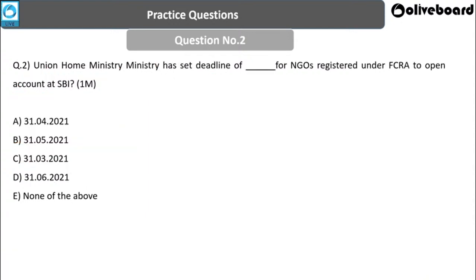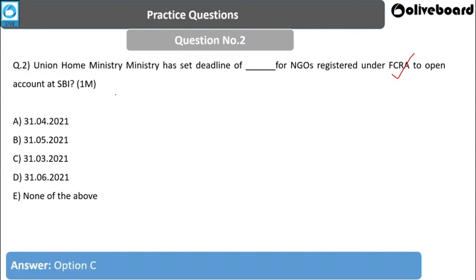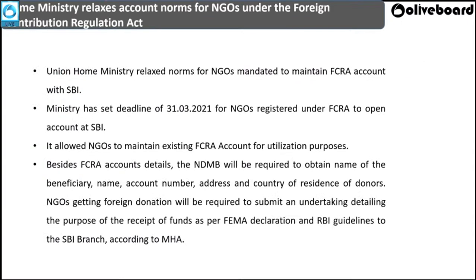Next question: The Union Home Ministry has set a deadline for NGOs registered under FCRA to open an account with SBI. What is that deadline? The deadline is 31st March 2021. Within this deadline, all NGOs registered under the FCRA Act must open an FCRA account at the New Delhi branch of SBI.